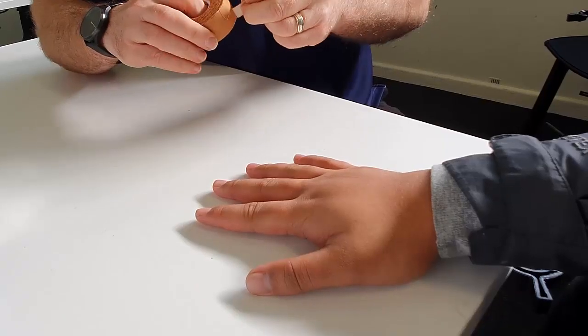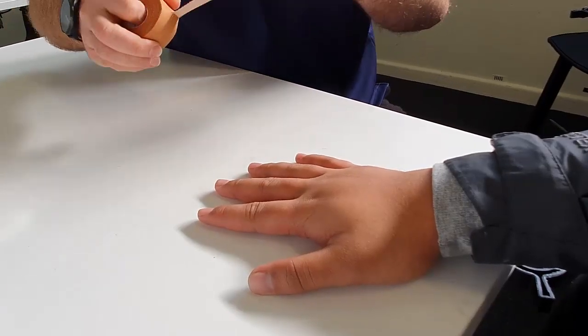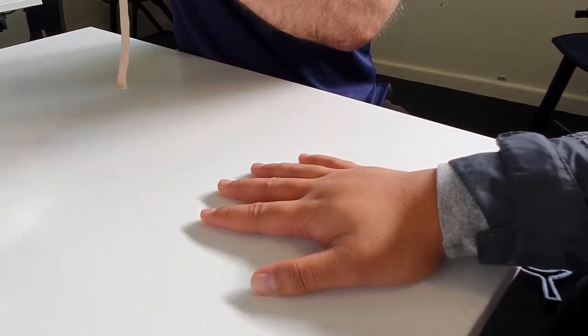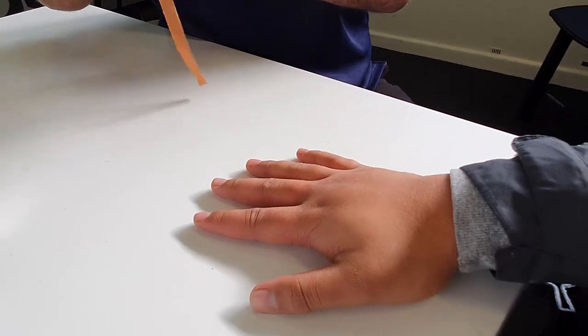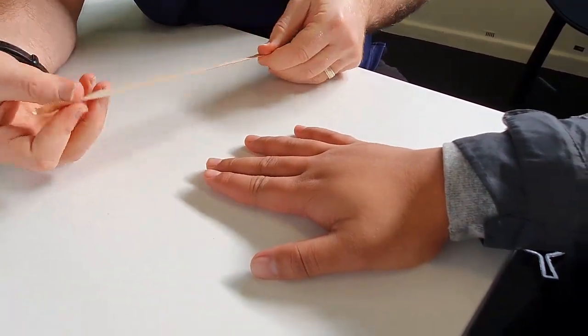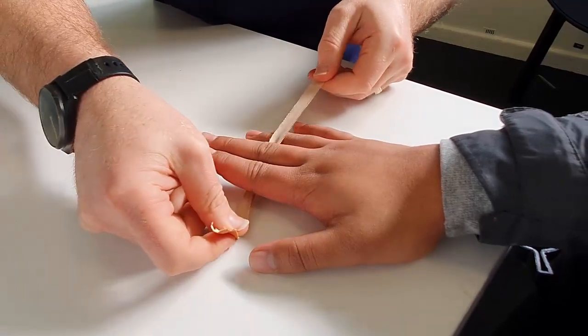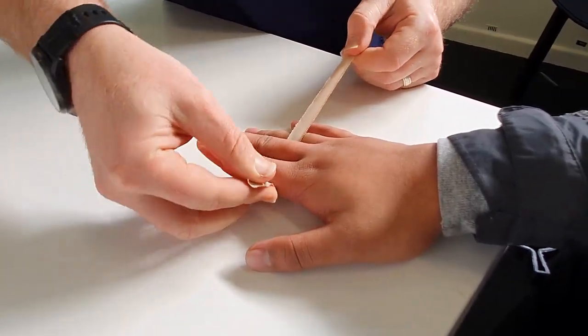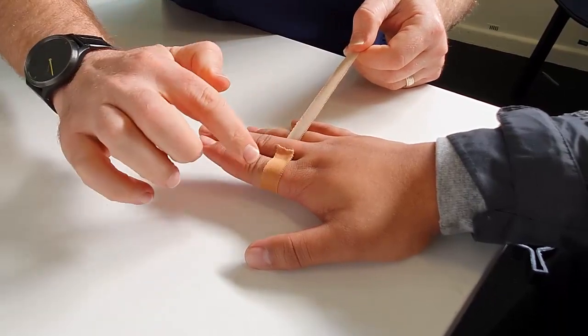We'll get thin tape and literally just buddy strap one finger to the next. If you bring these two fingers together and lift up, we want to come below the joint through here.